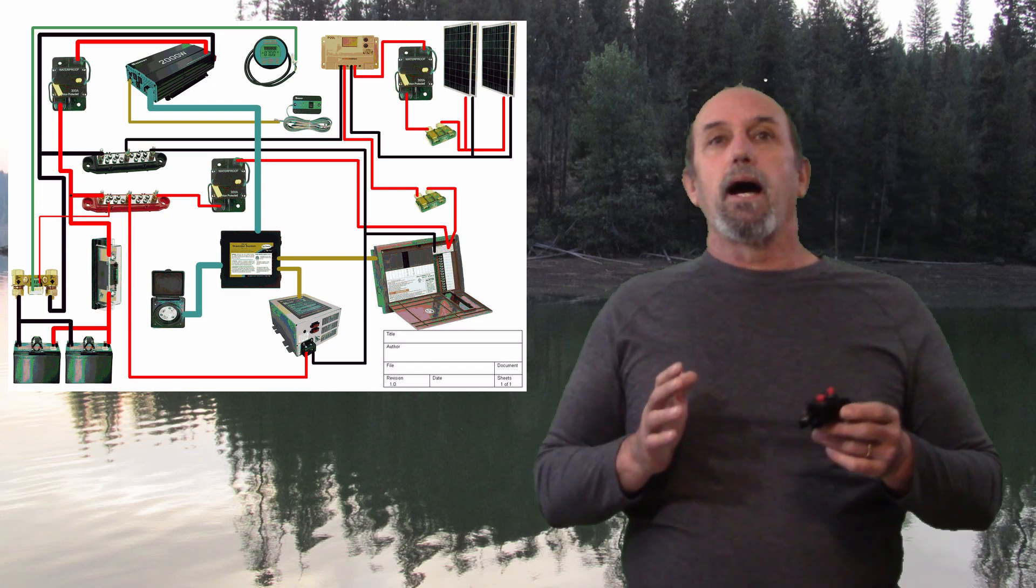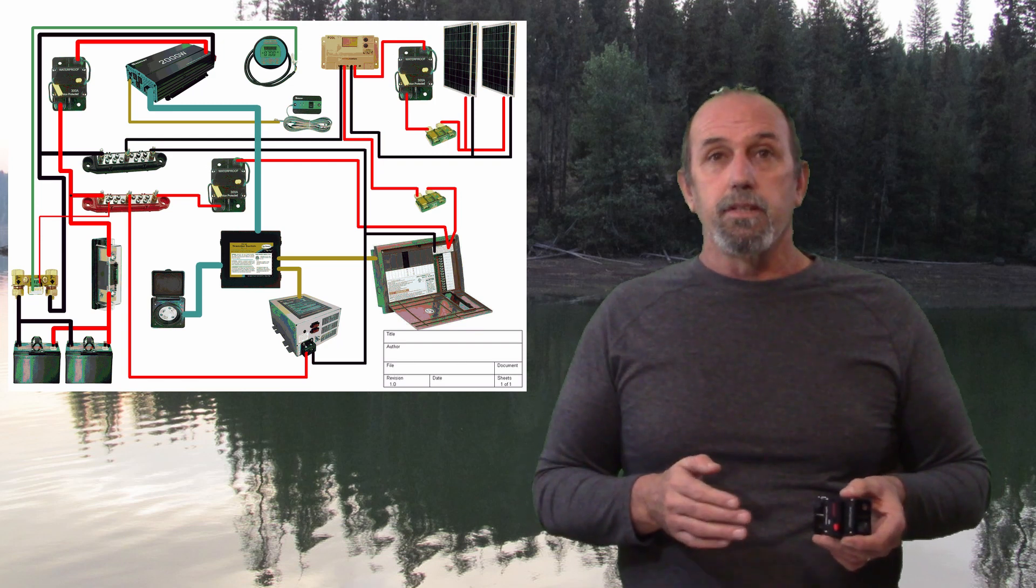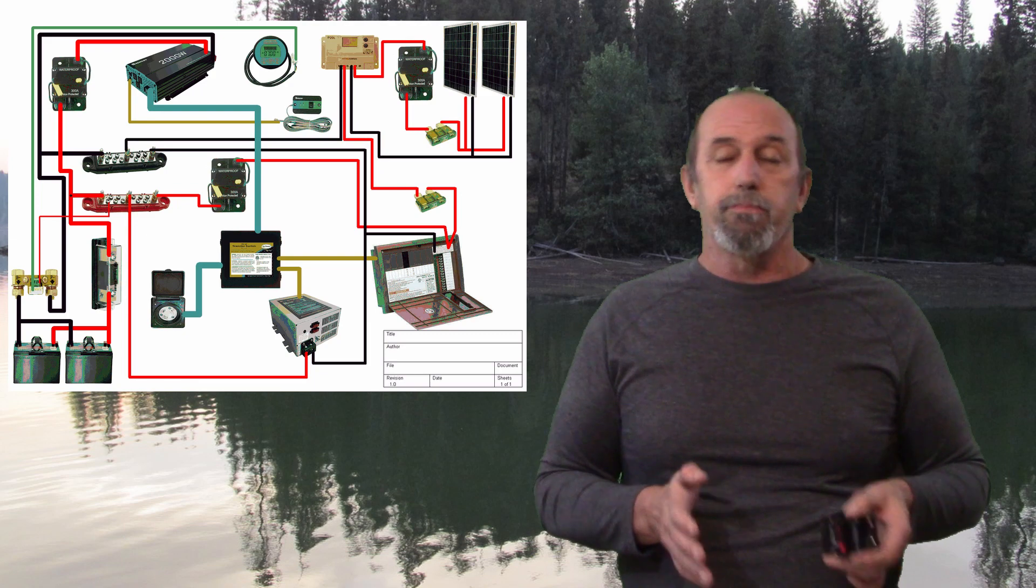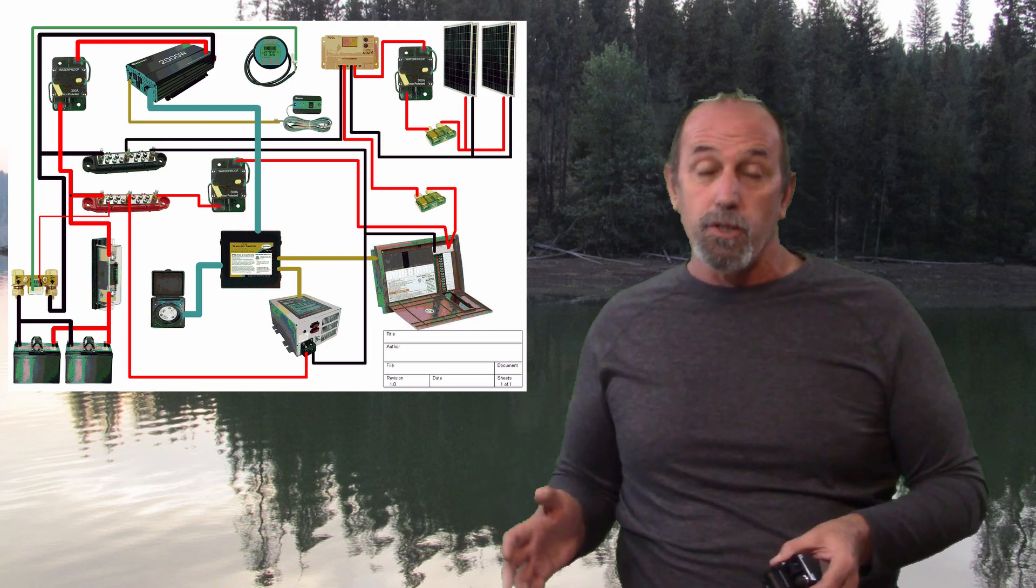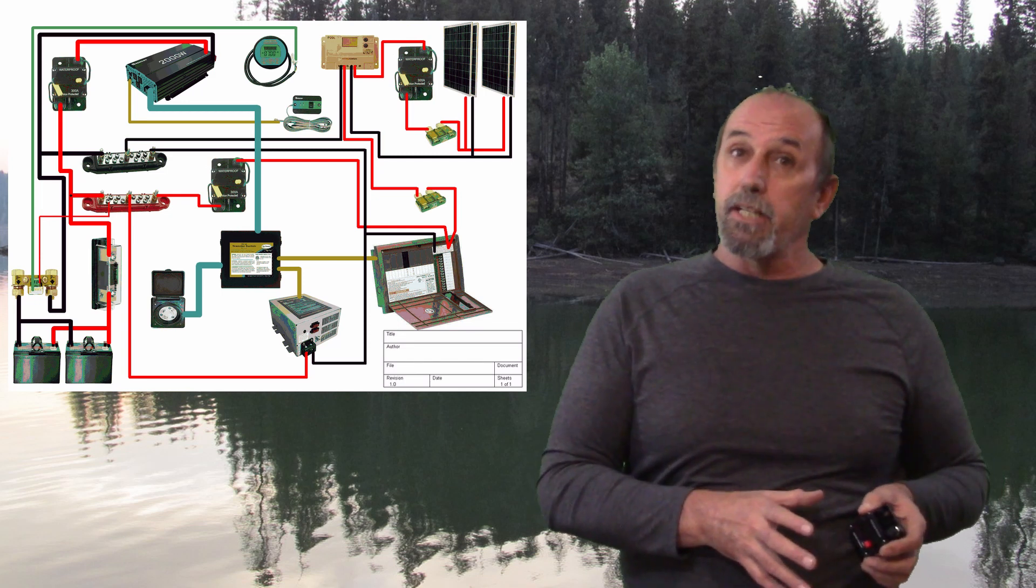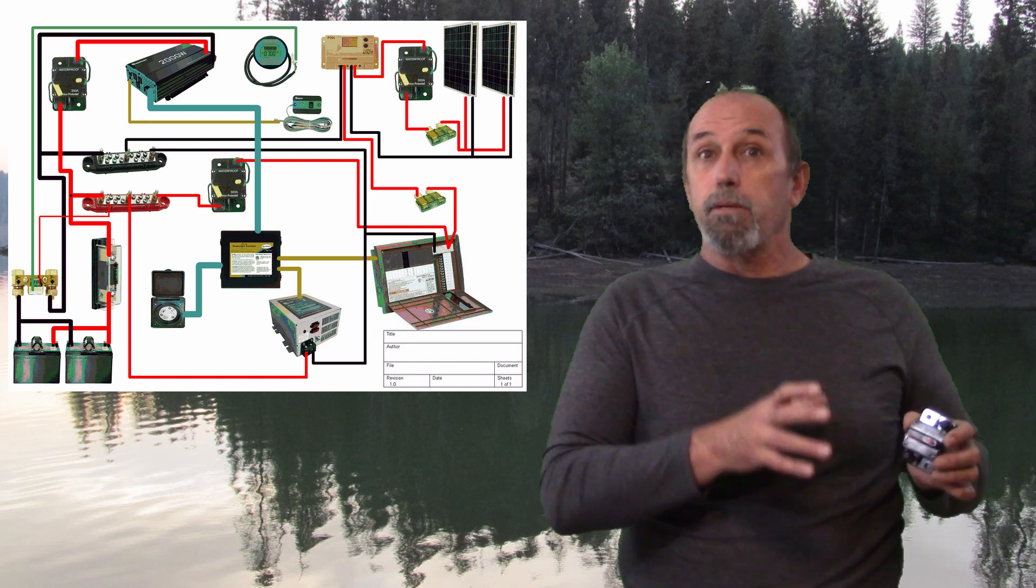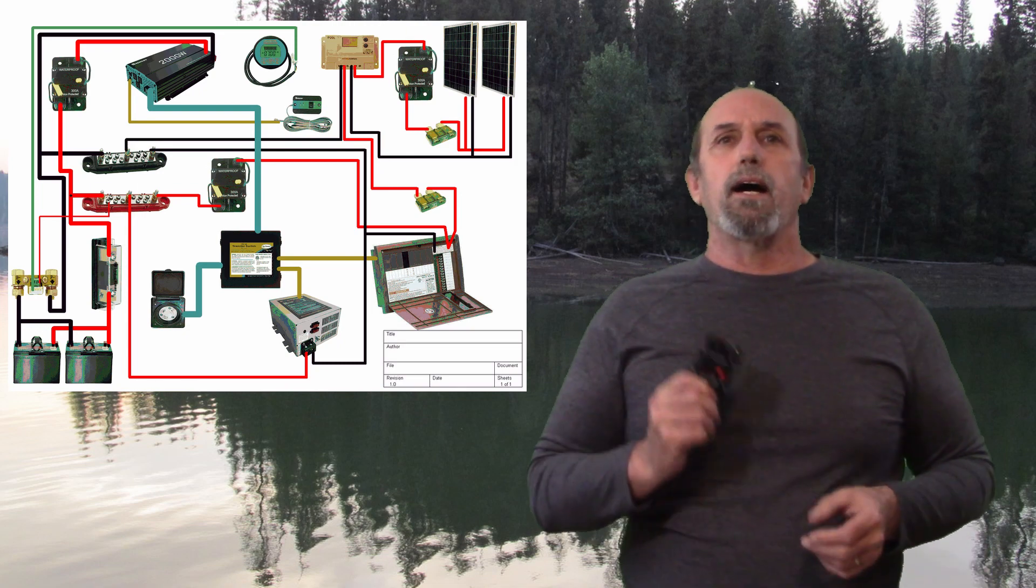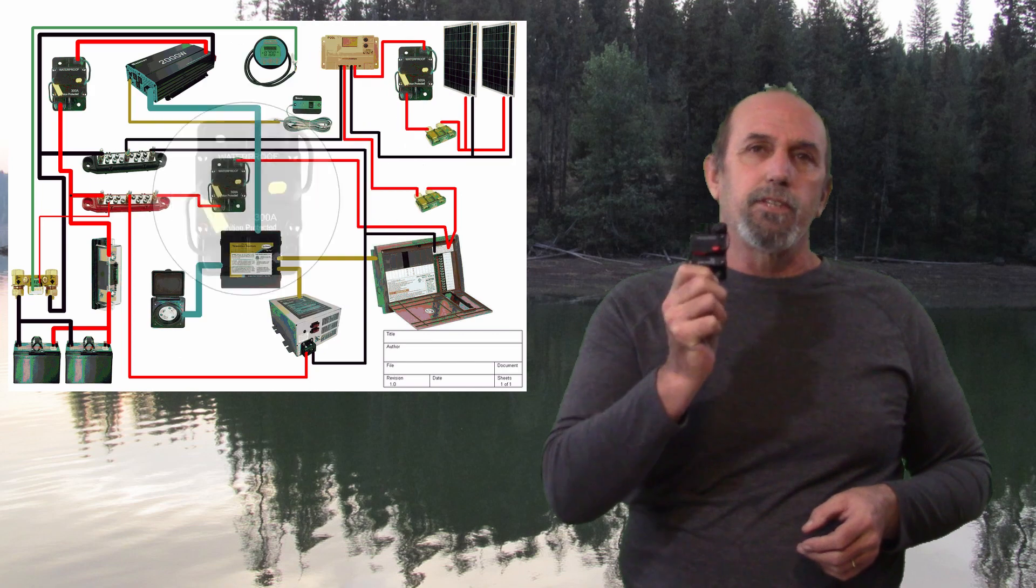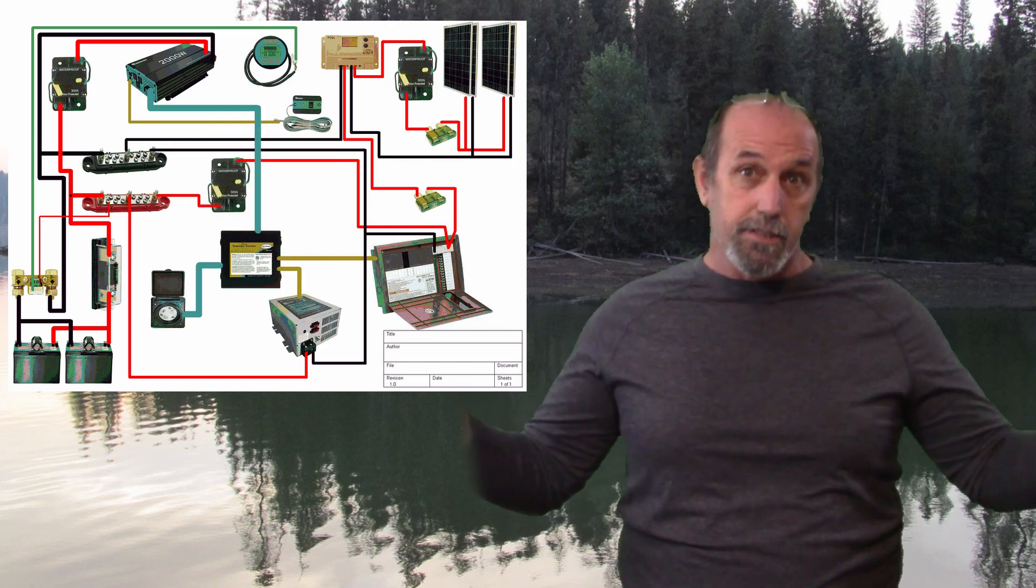Now my solar array right now is only 200 watts. I do in the future plan on adding and upgrading it to at least 400 watts, also upgrading the solar charger to an MPPT solar charge controller. This breaker right here is 50 amp. I've got that rated for my upgraded system that I want to do.